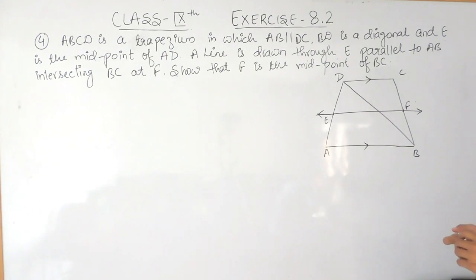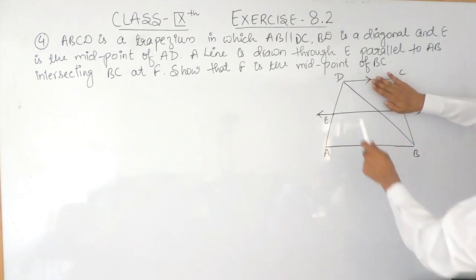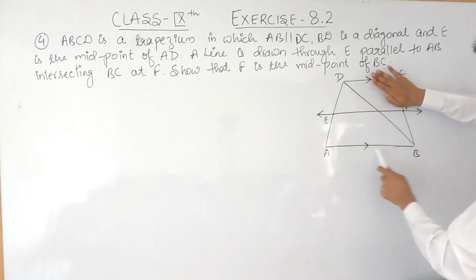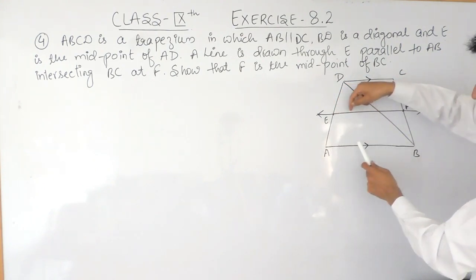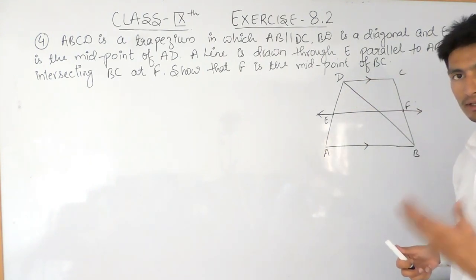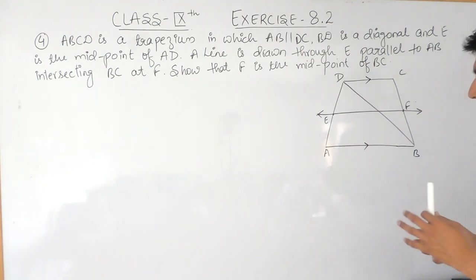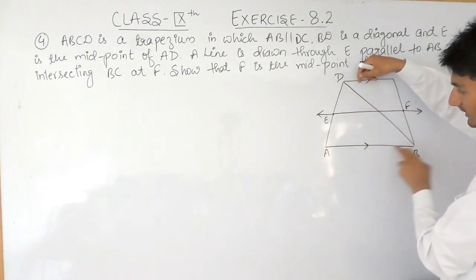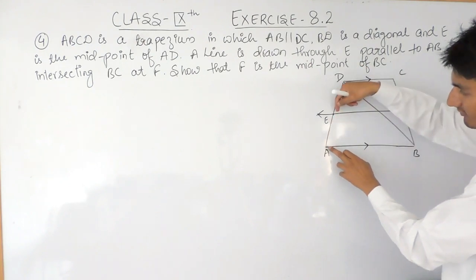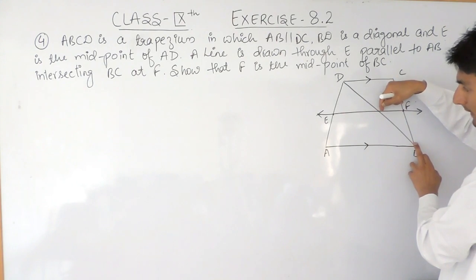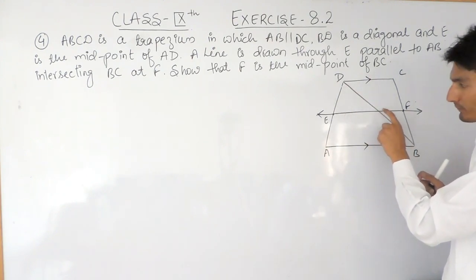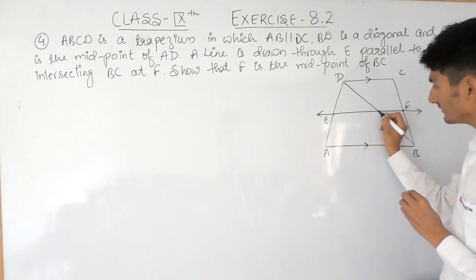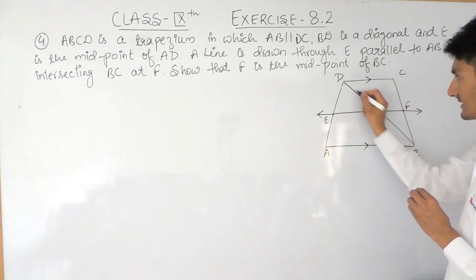To show this, we have to use the midpoint theorem. The midpoint theorem works in a triangle. So first let's look at triangle ADB. In this triangle, E is the midpoint, and this line is parallel to AB. According to the inverse of the midpoint theorem, in a triangle, if from the midpoint of a side you draw a line parallel to the second side, it bisects the third side. So we can confirm that this point is also the midpoint of DB.